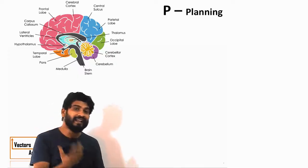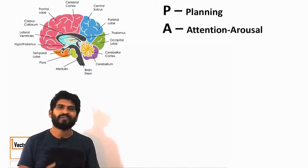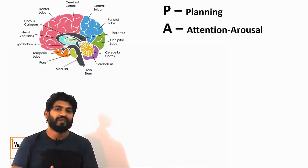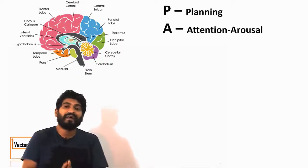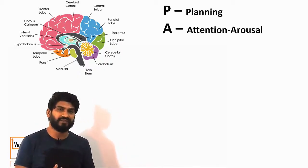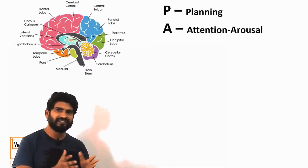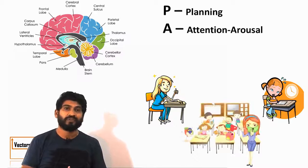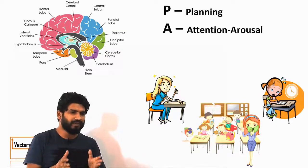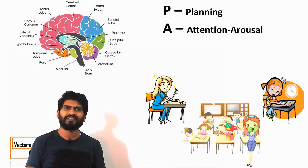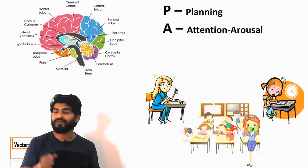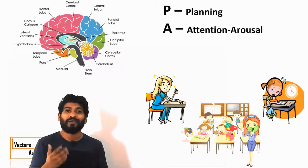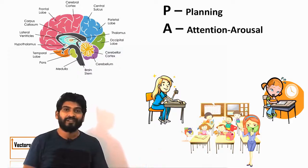The next ability is attention arousal. Now the attention arousal is basically done by the brain stem part of your brain. This actually prioritizes different stimulus which you receive. Consider for example you are sitting in an examination hall and there is a lot of noise going around in the other classroom. So few of the students will be able to focus on their exam and will be able to write their exam without any problem. Now that depends upon this ability.